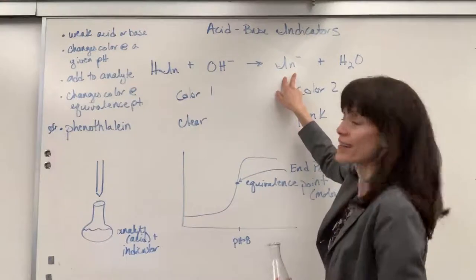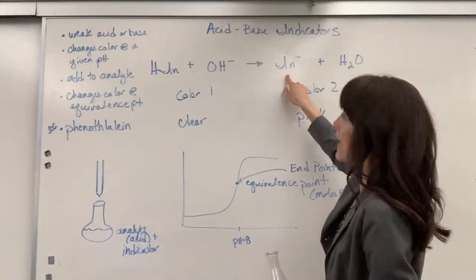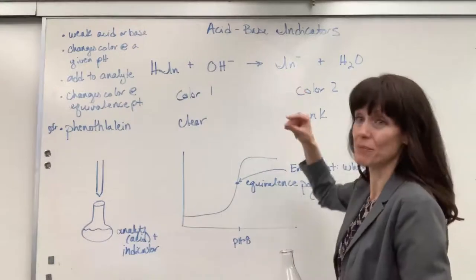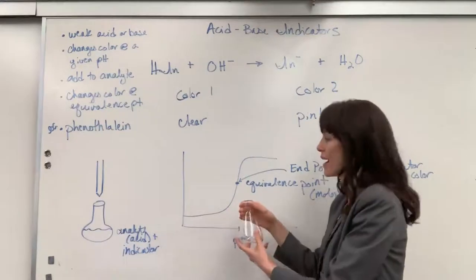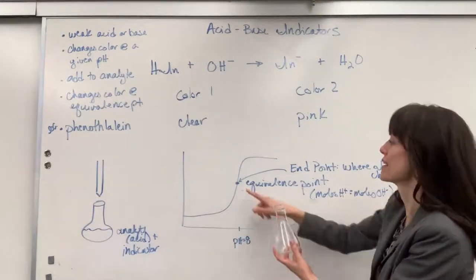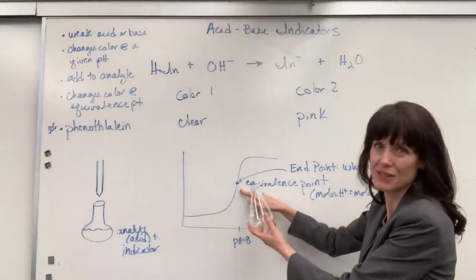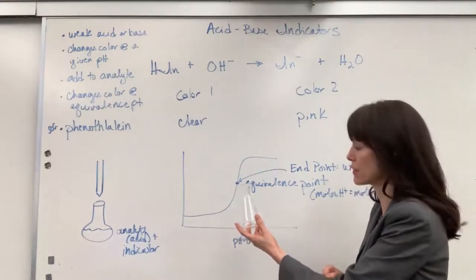It's reacted. Right here, all you have left is the anion of the indicator, and boom, it changes color. Right there, you add the last drop to react so that exactly moles of hydrogen equal moles of hydroxide, and you're at the equivalence point. You see it. You physically see the change, the color change.